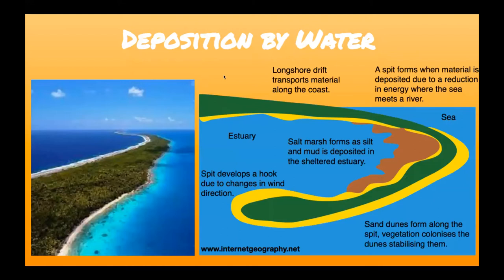On the coastline, a sea spit can form when soil and other materials are deposited where the sea meets a river. That can also form salt marshes with silt and mud deposited once the river meets the sea. There are many interesting landforms that can form when rivers meet the sea — not just deltas.